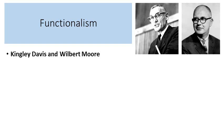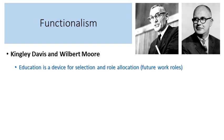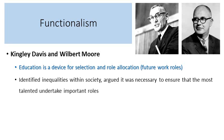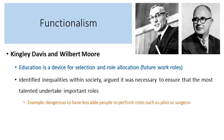Kingsley Davis and Wilbur Moore argued that education is a device for selection and role allocation — a good way of working out who is going to do what job later on in life. They identified there were some inequalities within society, but argued it was necessary to ensure that the most talented undertake important roles. Some jobs are more important than others, and we want to make sure that the best people are in those most difficult or important jobs so that they're done correctly. Otherwise it could be dangerous to have less able people perform roles such as pilot or surgeon.